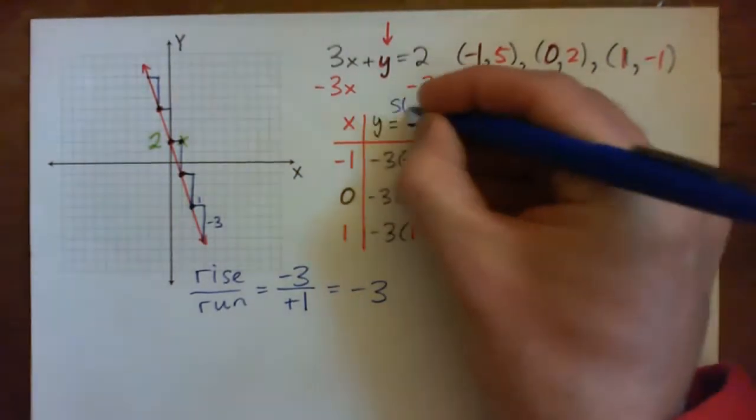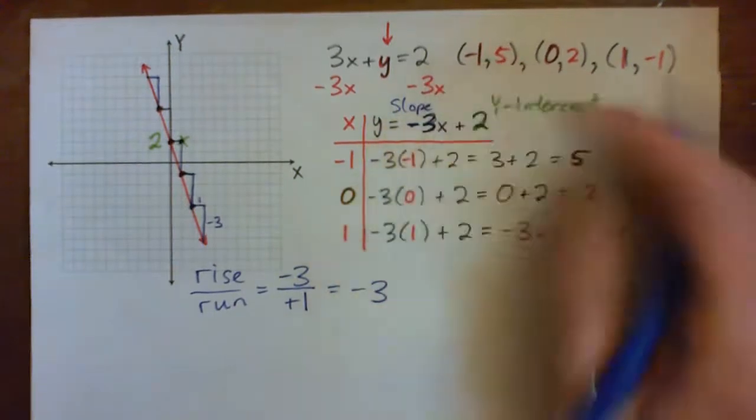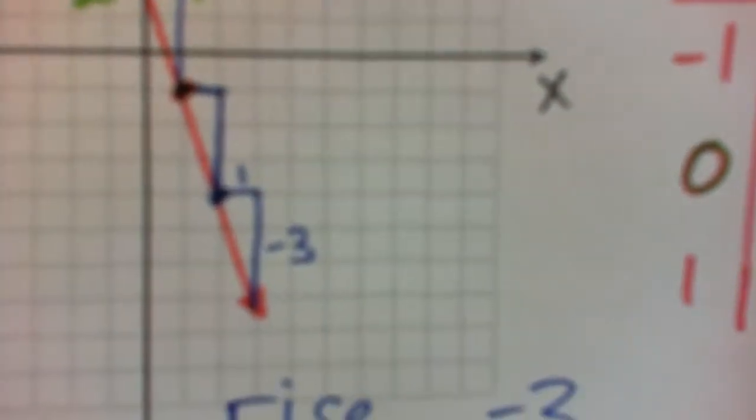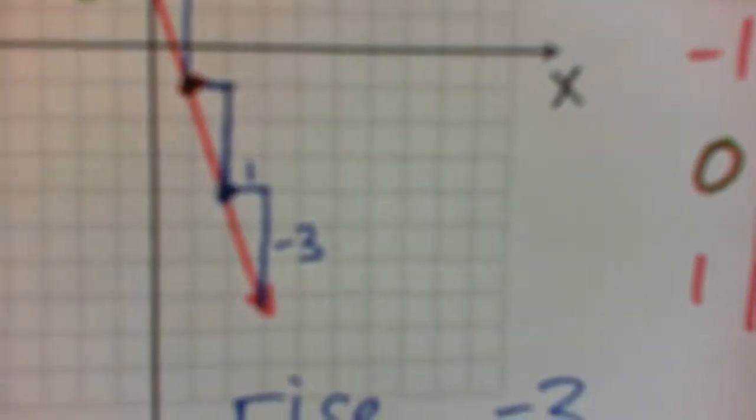And that's the slope, okay? The number in front of the x. All right? You can see that on the graph. Every time you go over 1, you go over 1 and down 3, and you get to the next point, right?